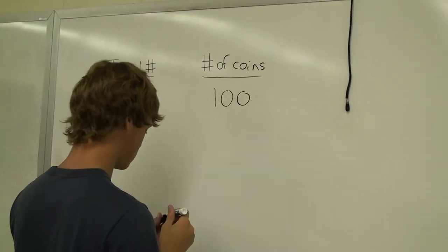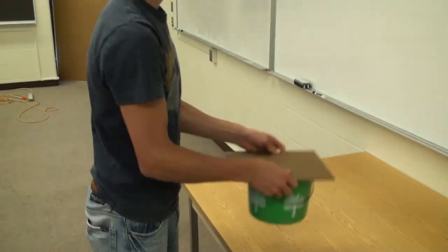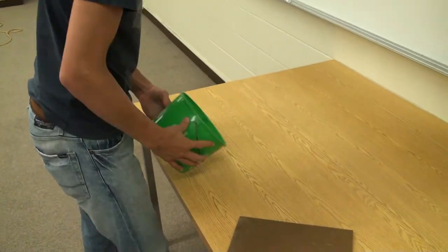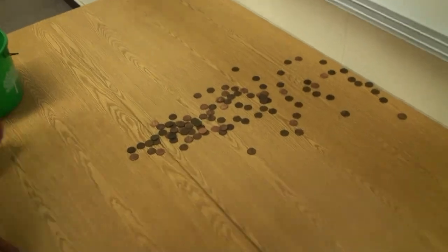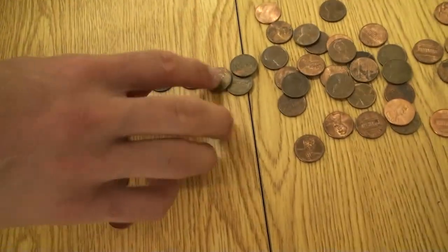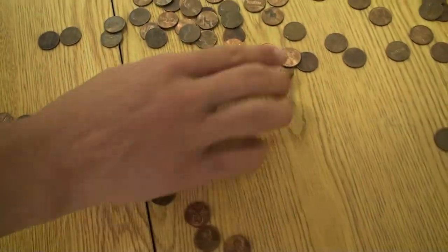While you are waiting for the Geiger counter to complete its one hour of work, you can perform a simulation with coins and dice. Start with 100 coins, flip all the coins at once, and separate out the heads from the tails.